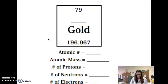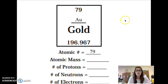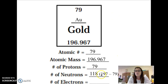On page 12 in your packet, let's work some examples together. This element is gold. The symbol for gold is AU — go ahead and fill this in. The atomic number, the top number, is 79. The atomic mass is the bottom number: 196.967. The number of protons is the same as the atomic number: 79 protons. For neutrons: 196.9 rounds up to 197, minus 79 equals 118 neutrons. The number of electrons is the same as the atomic number: 79 electrons.